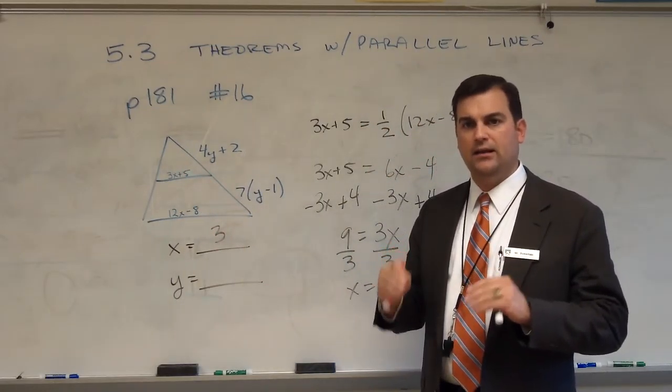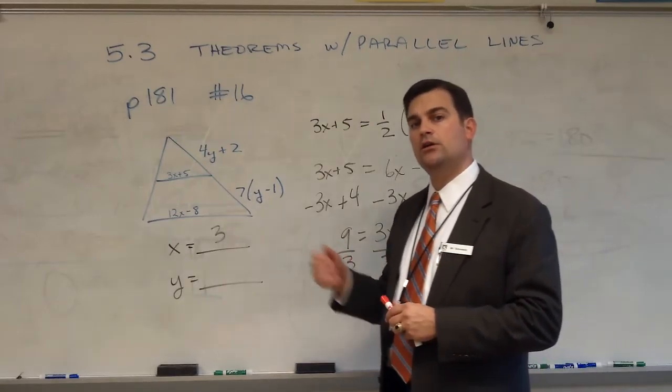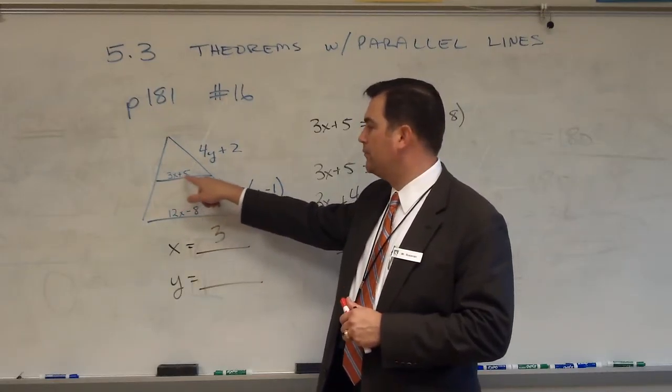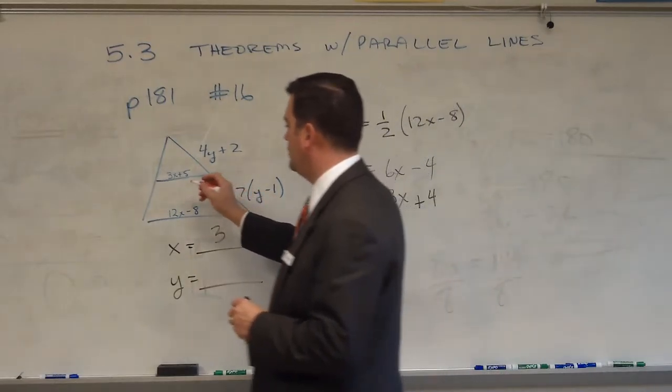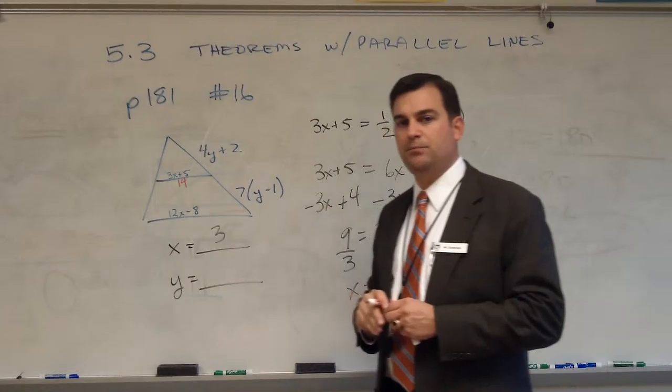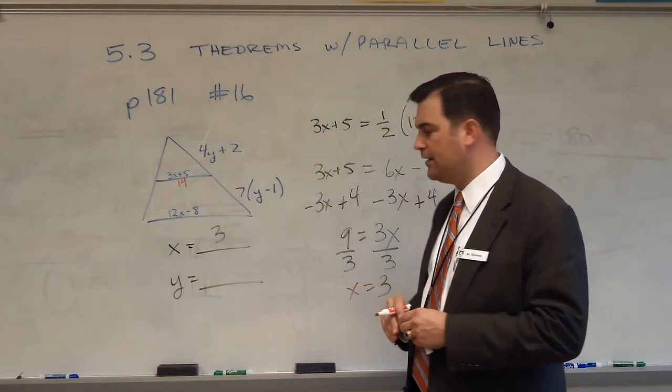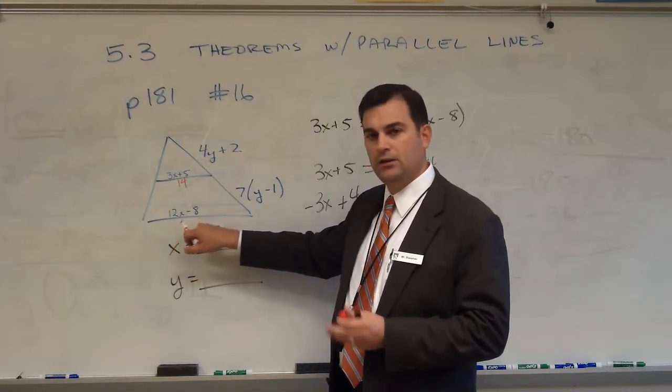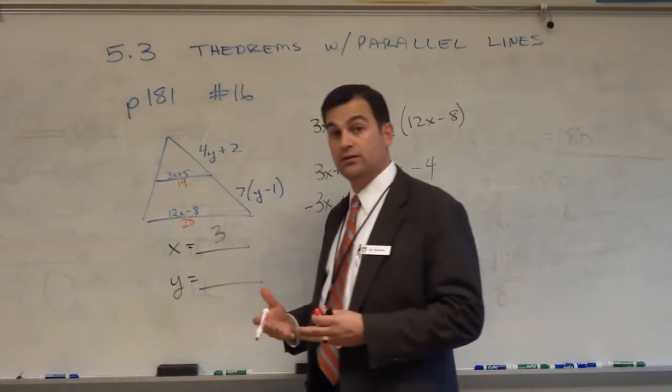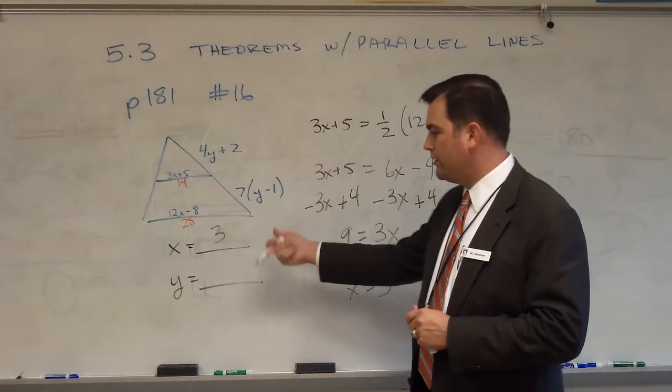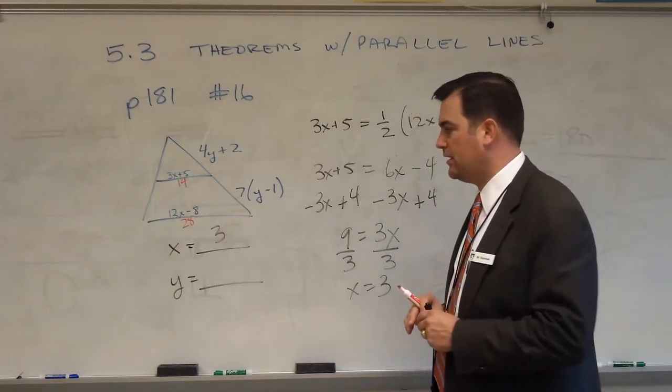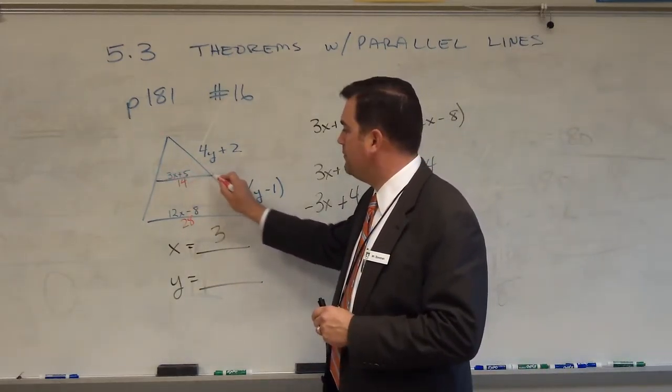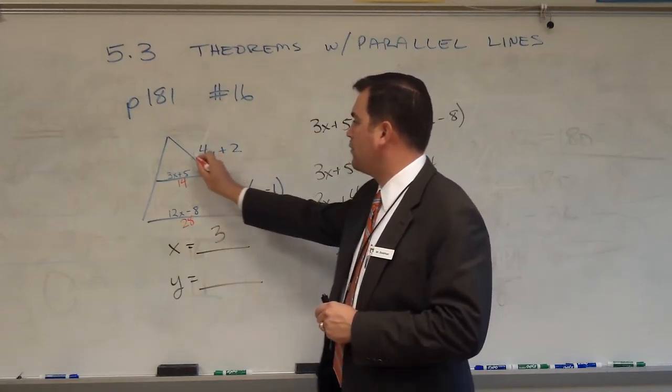If I wanted to error check that answer and make sure that I got the right answer, I would plug that value back into these two equations and make sure that my median came out to be one half of the base. So let's do that real quick in our heads. If x equals 3, then 3 times x would be 9 plus 5 would be 14. So this median should be 14. I'm expecting that this base then would have to be 28. Let's see if it is. 3 times 12 is 36. 36 minus 8 is 28. Well, that's great. It works. I've double-checked my work, and now I know that I've gotten the right answer. x definitely has to equal 3.